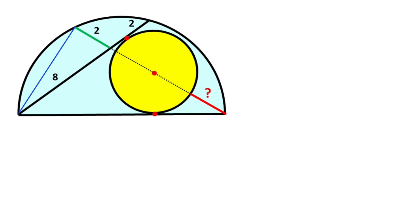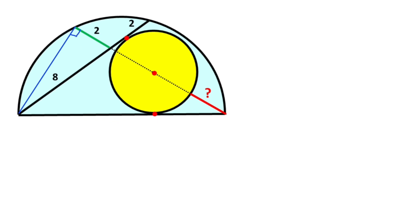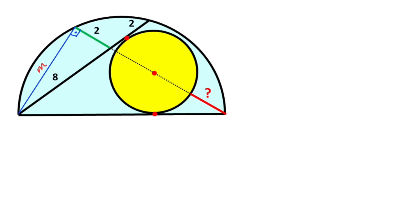First step: if we connect these two corners, notice that this angle is opposite of the diameter. Therefore, here must equal 90 degrees. I'm going to represent with M for this triangle. If we apply the Pythagorean theorem, we get the value of M.